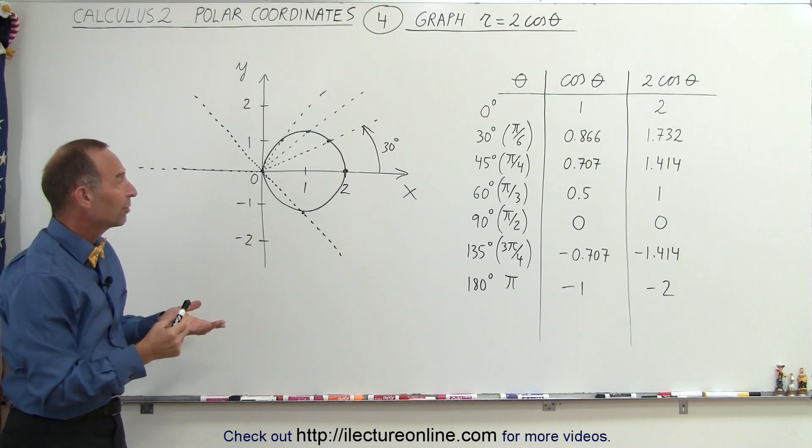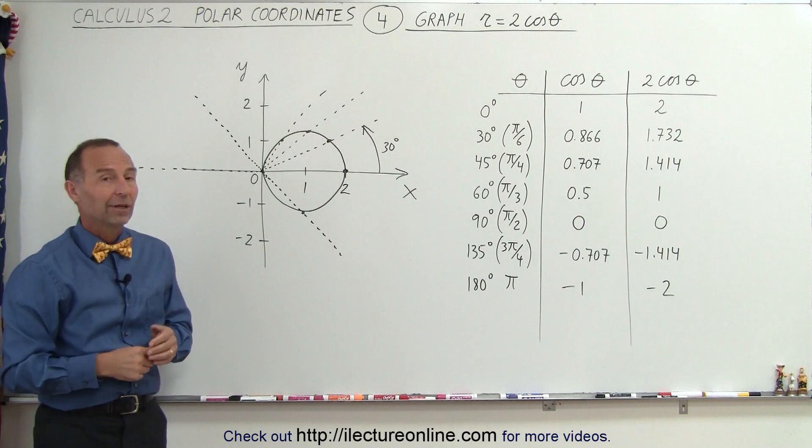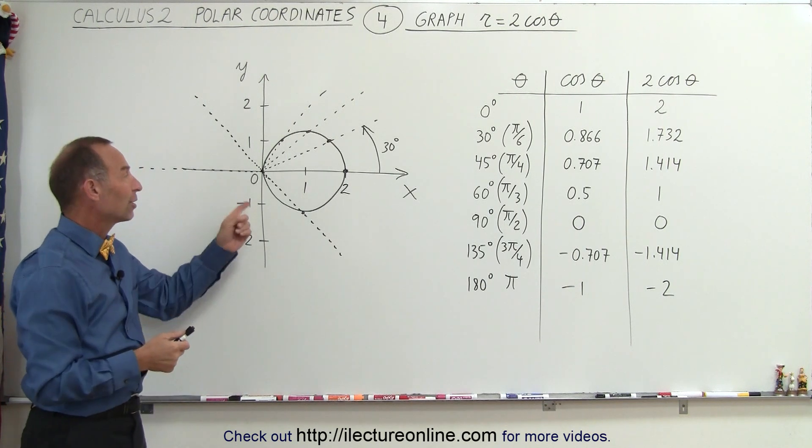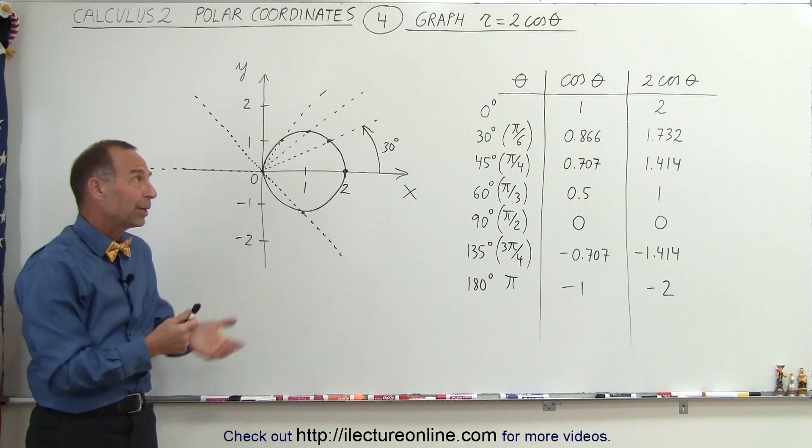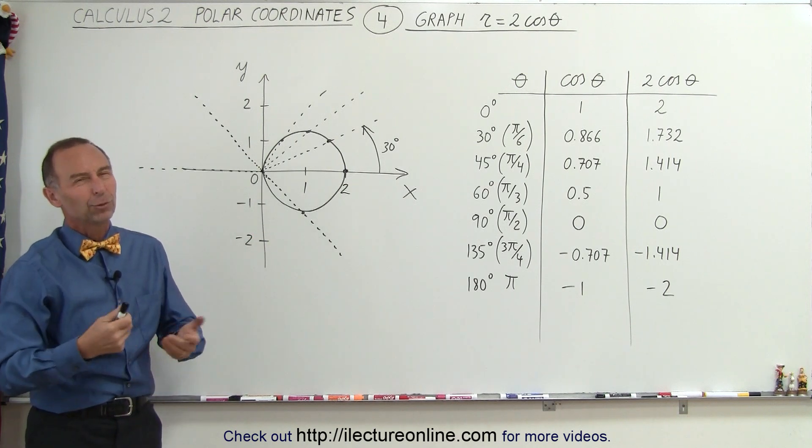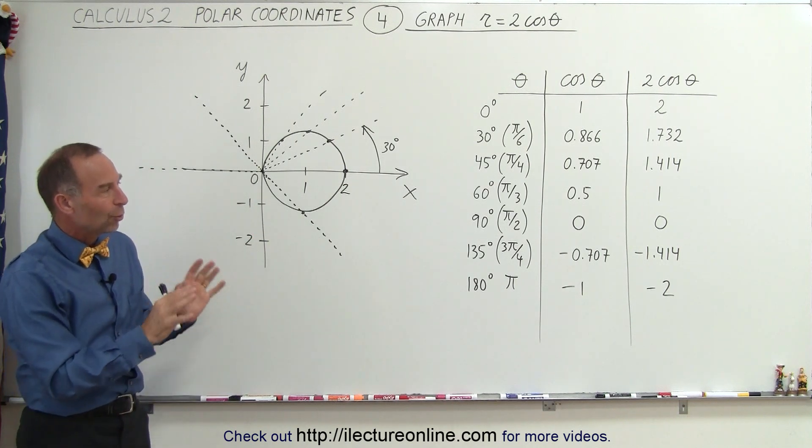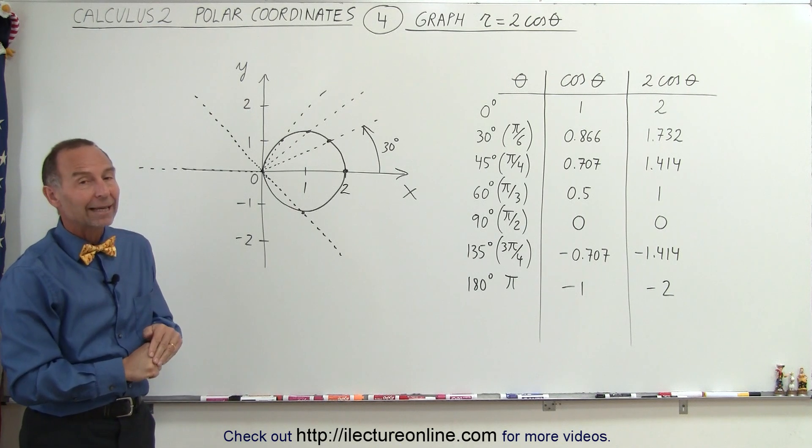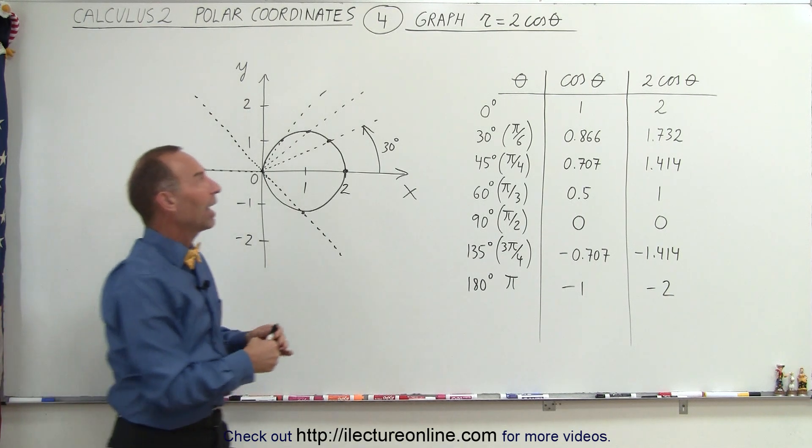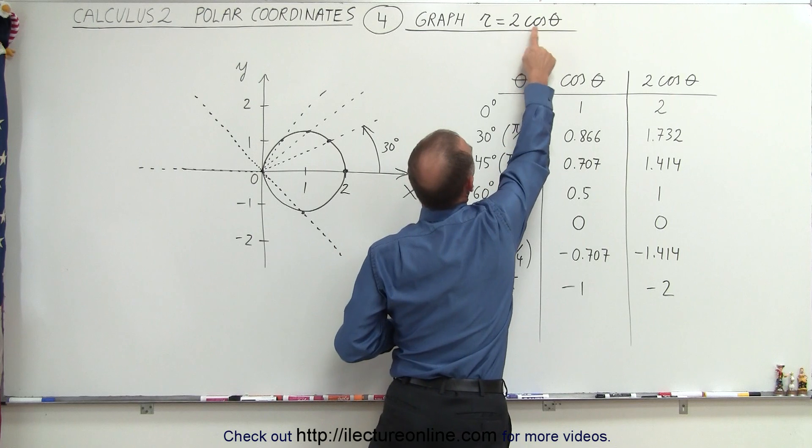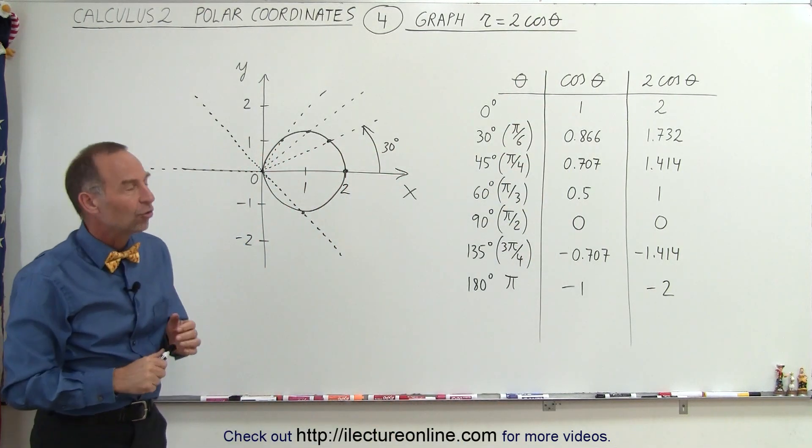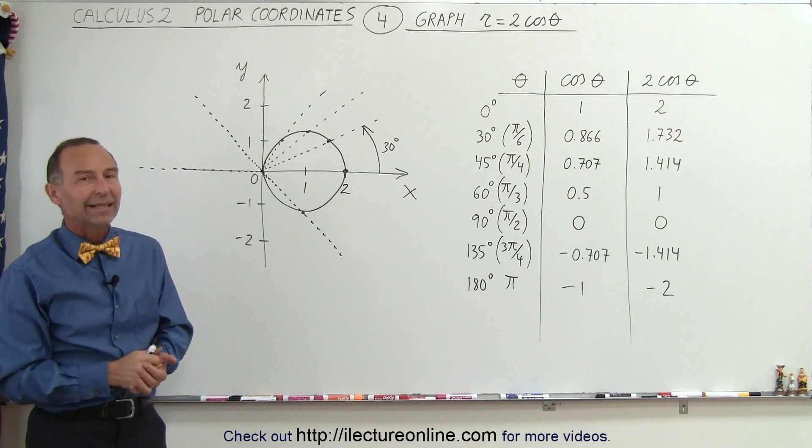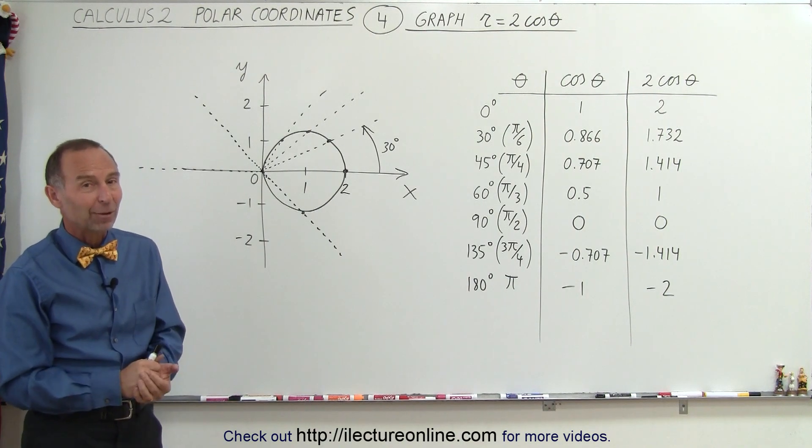So here we have the graph represented by the equation r equals 2 times the cosine of theta, and notice that would look very different if we try to graph that using the x-y coordinate system. But there you go, that's what that looks like. We'll do a few more examples and show you what different kind of functions may look like, as the angles change, as we add constants to the angle, as we put constants in front of the functions. You'll see that the graph continues to change, and we'll get some examples of that in the next several videos. That's how we do that.